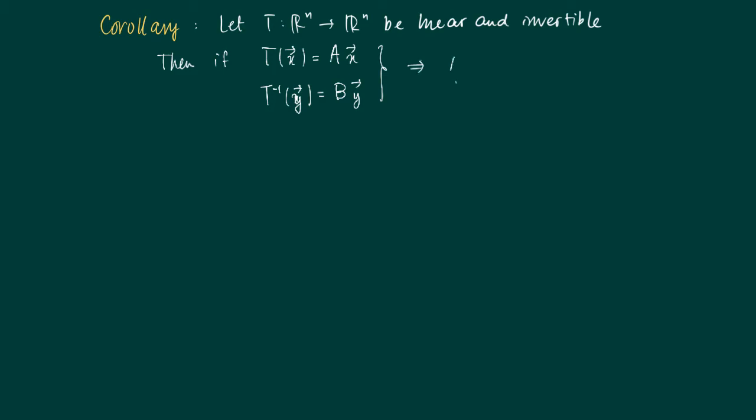Well then we have that the two matrices, we can form the products, the dimensions are okay, so we can look at AB and B times A, and they lead to the identity matrix.